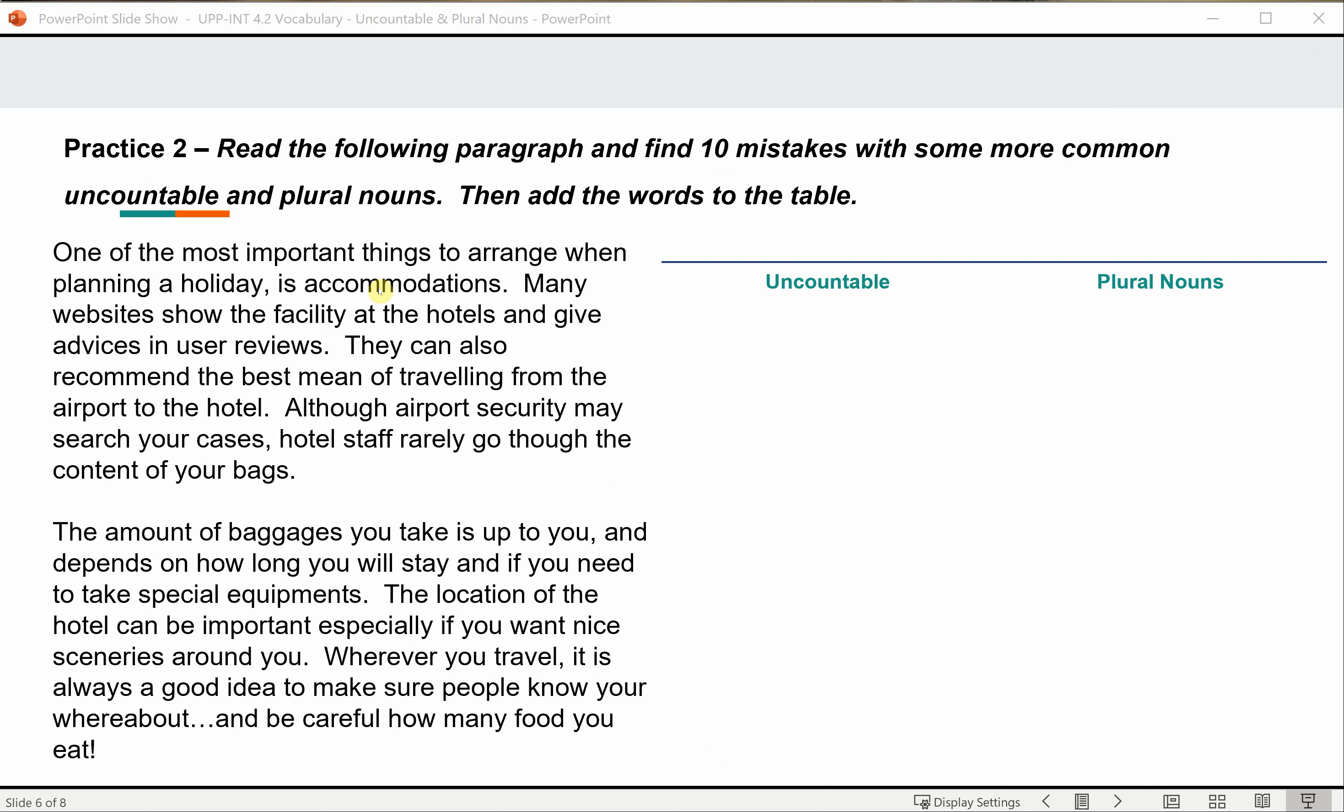Exercise 2. Read this text and find 10 mistakes with more common uncountable and plural nouns. When you have found the mistakes, add the uncountable and plural nouns to the table on the right hand side. Again pause the video while you do the practice.